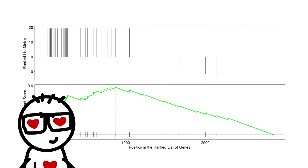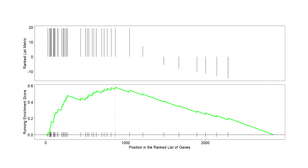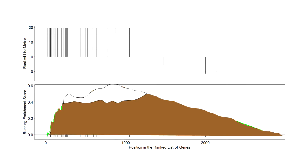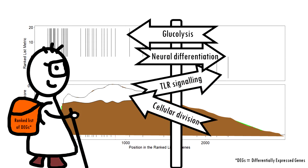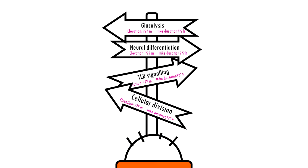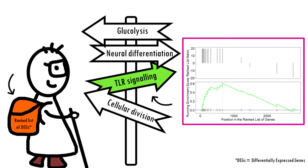These plots always remind me of mountains, and in a way gene set enrichment analysis is a bit like hiking. For each gene set or pathway you test, you go for a hike — but there's a trick: you don't know how tough your hike is going to be. The shape of the mountain will depend on the gene set you're testing and your list of ranked genes, and contrary to actual hiking, you want the mountain to be as tall as possible.